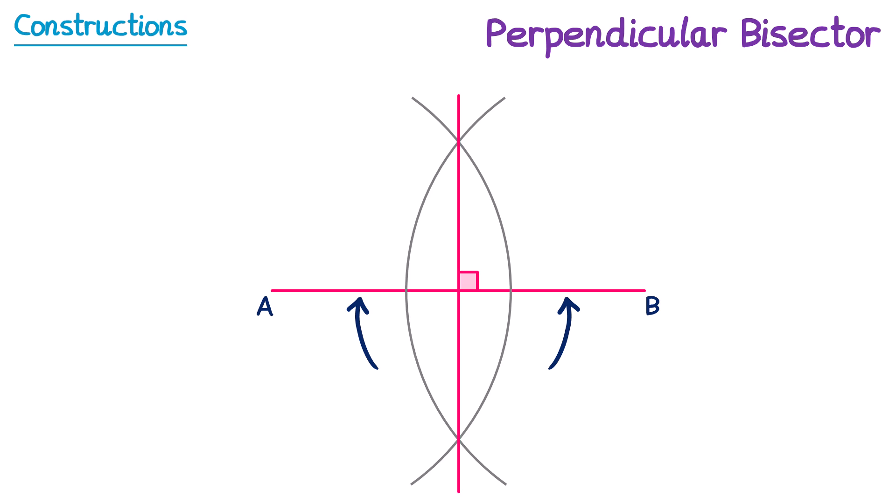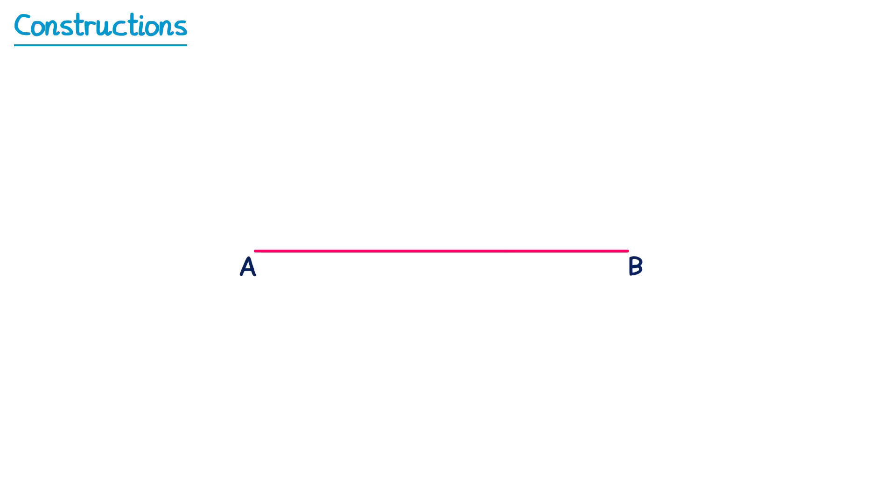Sometimes we have to construct a perpendicular line, but it doesn't have to go through the middle, so it's not a bisector. Take this line segment AB. Let's imagine we wanted to construct a perpendicular line through this one, but specifically through this point P, which is not in the centre. So it would need to look something like this.